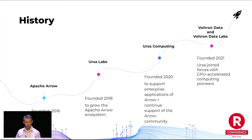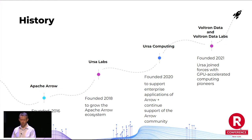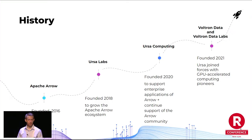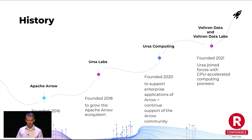In 2020, things became a bit of a whirlwind. We spun out to create a startup, Ursa Computing, which is just when John joined up with me, working to bridge the gap between the open source ecosystem and the needs of enterprises building on Apache Arrow. In 2021, we saw an opportunity to join forces with even more folks from the Arrow ecosystem, in particular pioneers from the GPU computing ecosystem, to create a unified accelerated analytical computing company, which we're calling Voltron Data.